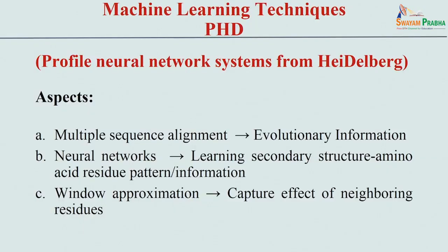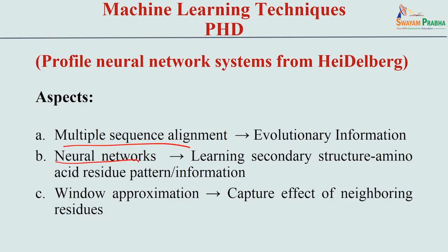They provide sequence alignment information as input features and use machine learning techniques such as neural networks or support vector machines. For example, with a linear neural network, it learns from the known input information - amino acid patterns or neighboring residue information. They also use different window sizes: 3, 5, 7, or 9, optimizing the window size and parameters to predict secondary structures.